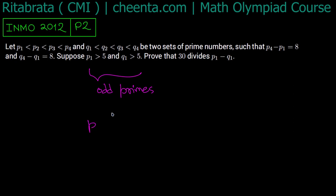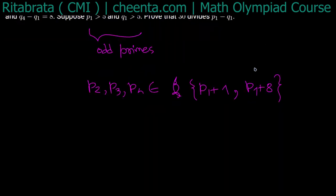So p2, p3, p4 all lie in the interval between p1 + 1 and p4, which is p1 + 8. So in this interval all the other primes lay. Now as p1 is odd, so p1 plus any odd number is even. So p1 + 1, p1 + 3, p1 + 5, p1 + 7, they cannot be primes because they are all even.